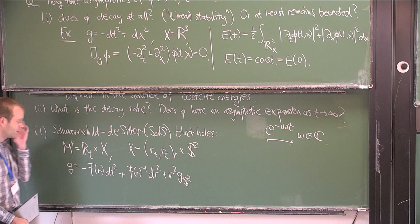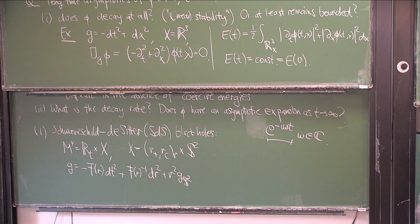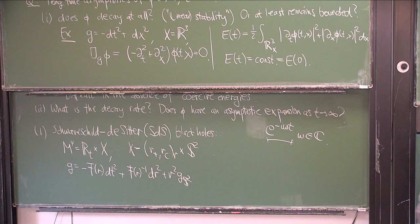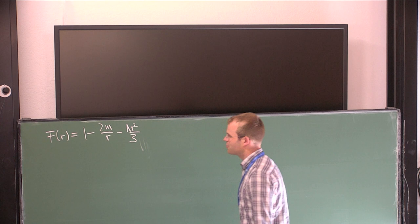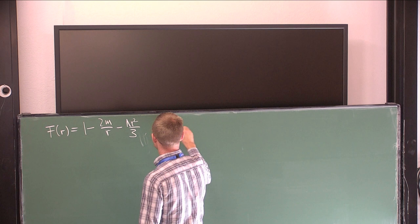If this function F were just equal to 1, this would be the Minkowski metric in polar coordinates. For the Schwarzschild-de Sitter spacetime, F is the particular rational function 1 − 2M/r − λr², where M is the black hole mass and λ is some positive cosmological constant.